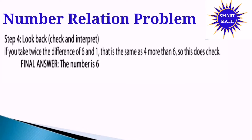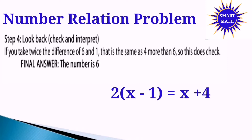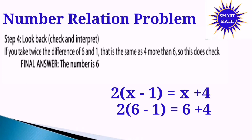Step 4: Look back or check and interpret. If you take twice the difference of 6 and 1, that is the same as 4 more than 6. So this does check. The final answer: the number is 6. Looking back at our equation 2(x − 1) = x + 4, substituting x = 6 gives 2(6 − 1) = 6 + 4, and both sides equal 10. This means the value is perfectly correct.